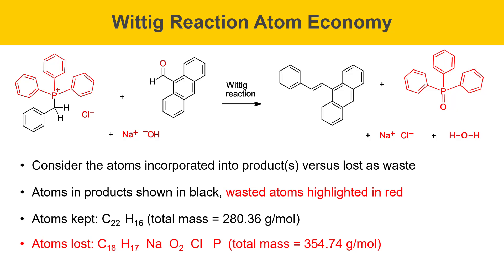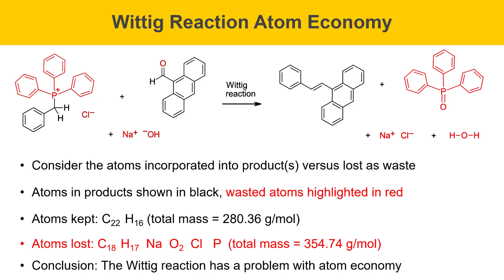This is a problem to think about when doing a Wittig reaction or any reaction that generates a lot of waste. The conclusion is that the Wittig reaction does have a problem with atom economy — the triphenylphosphine oxide is very large and wastes a lot of atoms. There has been recent work in this area; a Nobel Prize in Chemistry was awarded in 2005 for olefin metathesis chemistry, which generates alkenes but minimizes waste and doesn't generate triphenylphosphine oxide. Atom economy is an important concept in chemistry.